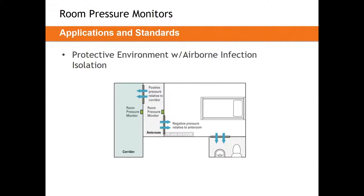The third type is the combination: protective environment with airborne infectious isolation. These patients are immunocompromised but also have a disease that could spread to the rest of the building. They need to be separated for the building's sake and for their own sake. These spaces have more physical separation from the rest of the building, meaning they have an anteroom. You need two room pressure monitors — one measuring from corridor to anteroom and one from anteroom to isolation room. Sensors go right above each doorway, with monitors at each door clearly visible.